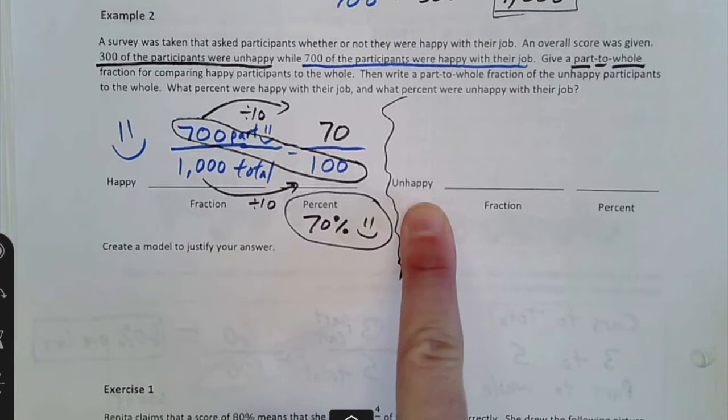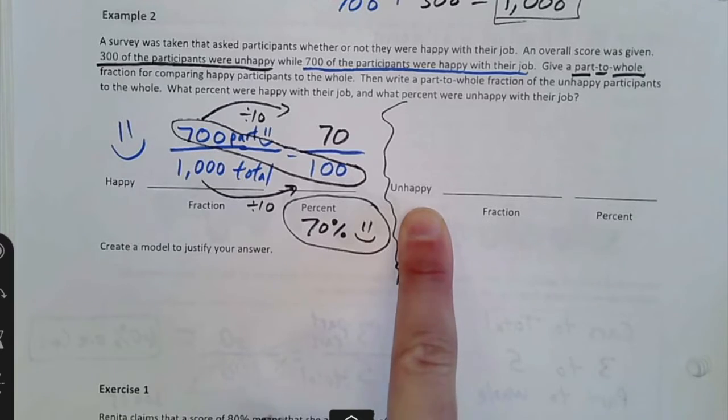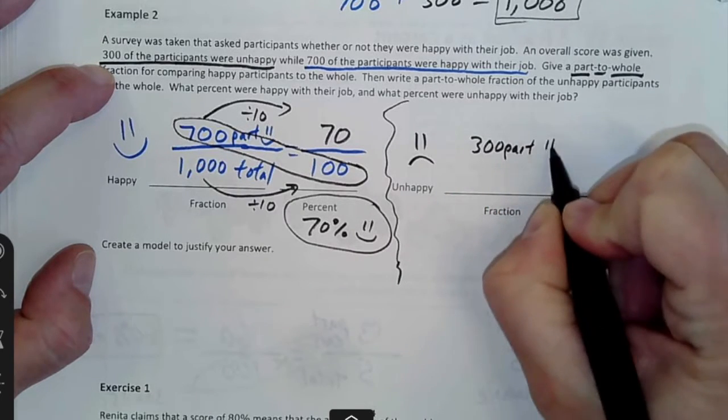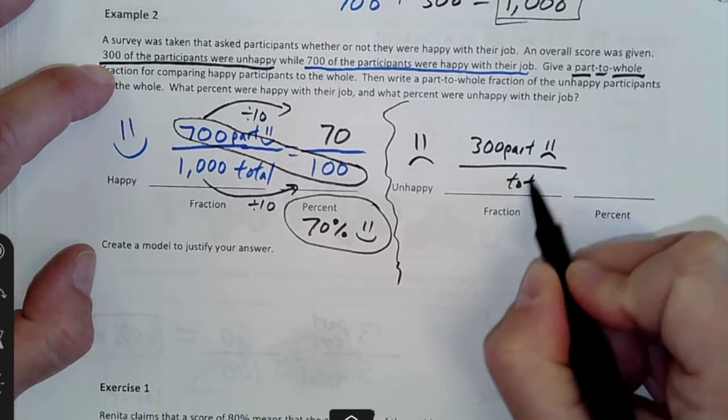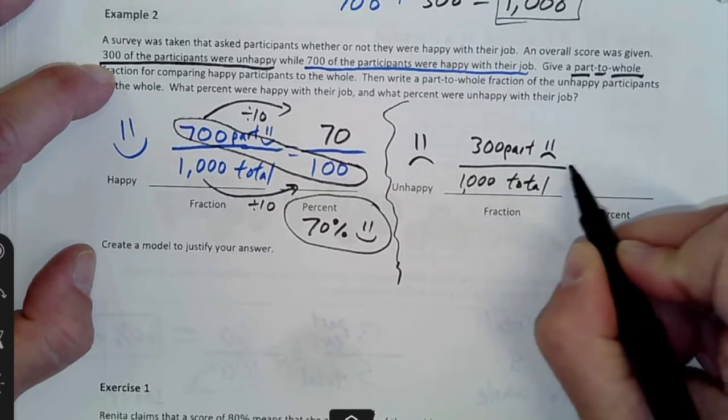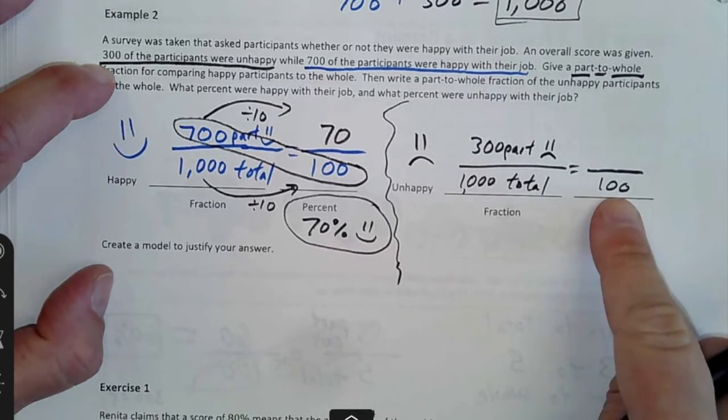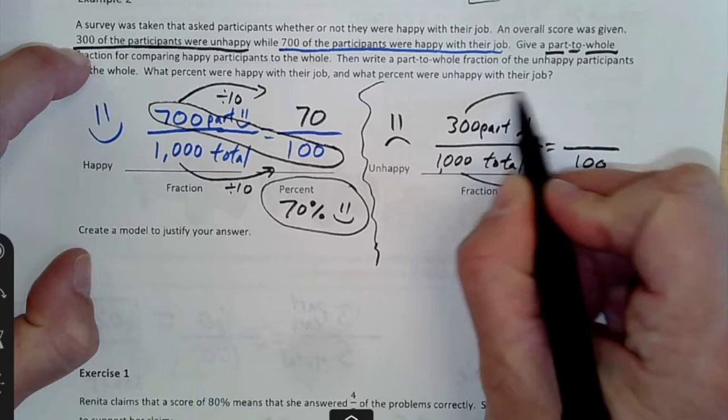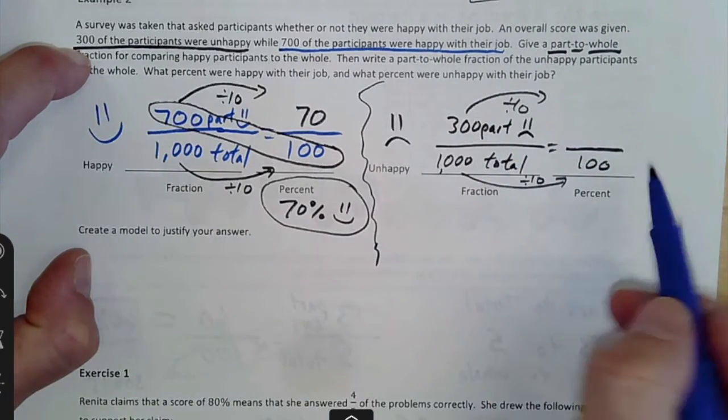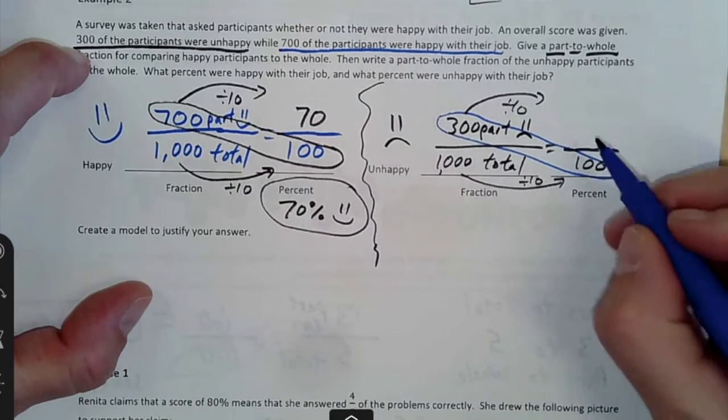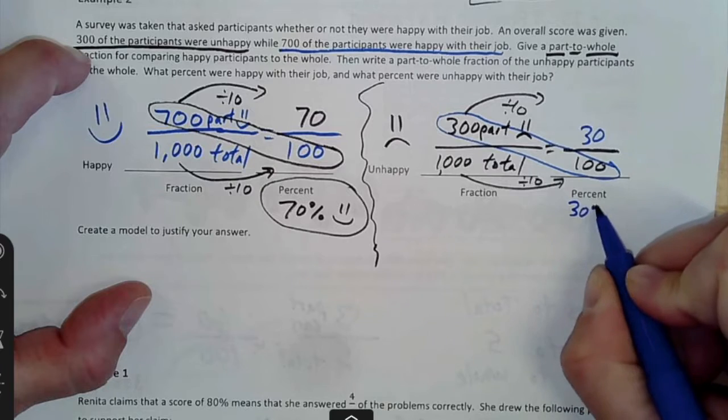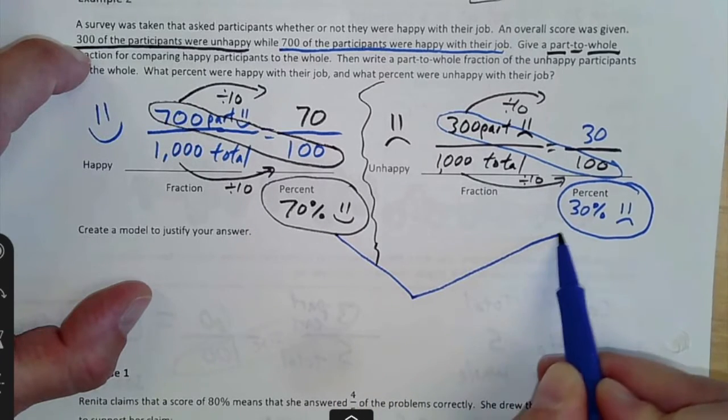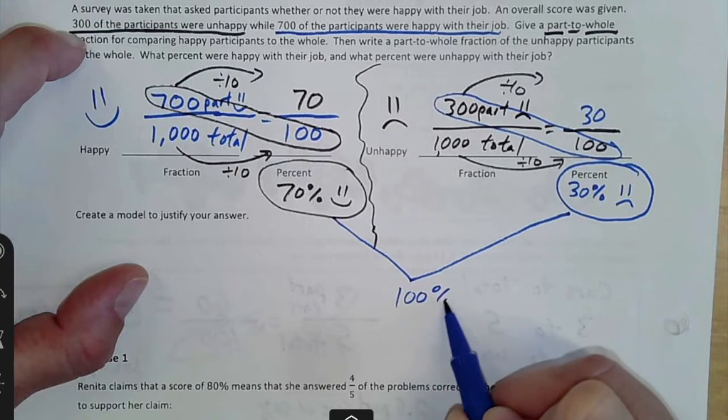Then they want to know the same thing, but what's our fraction of unhappy people? So unhappy we said was 300, so 300 would be the part that were unhappy with their job out of how many total and the total was still 1,000. Could we figure out what that would be out of 100 and why are we choosing out of 100 because we wanted a percent and a percent is out of 100. So divide by 10, divide by 10. Then could you solve cross-products 300 times 100 on your calculator and then divide by 1,000? That leaves us 30 out of 100, which means 30% are unhappy. Some people could see that because if you remember 70 and 30, these two parts have to equal a total of 100%.